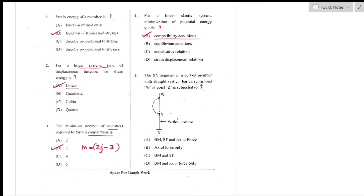Question number 5: The XY segment in a curved member with a straight vertical leg carrying load W at point Z is subjected to axial forces only. In the vertical member XY, the load passes through the axis and the eccentricity and bending moment will be zero, so this vertical member carries axial forces only — option B is the right answer.